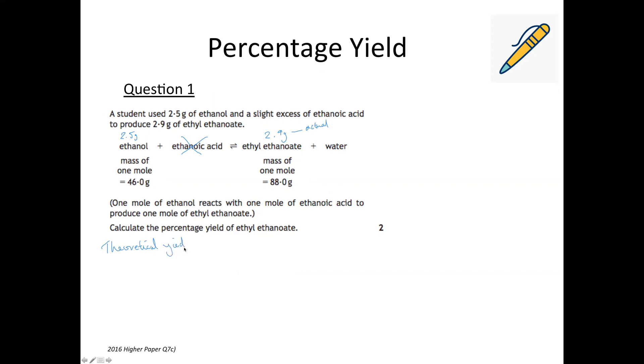However first of all we need to work out the theoretical yield. I'm going to do this by direct proportion but you can do it by calculating numbers of moles. So when you do it by direct proportion you start off with the mole ratio. It tells us in words here that one mole of ethanol reacts to one mole of ethanoic acid to produce one mole of ethyl ethanoate.